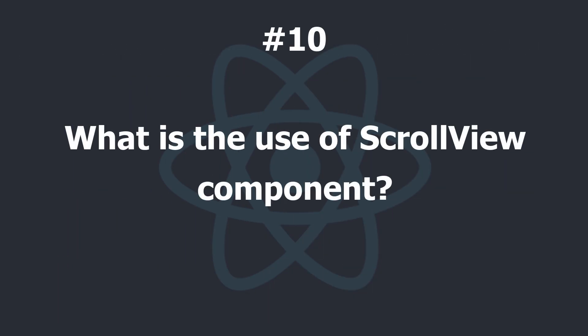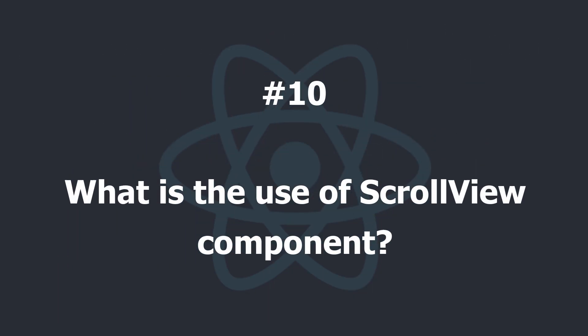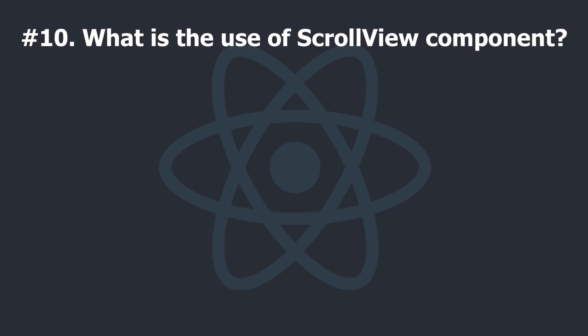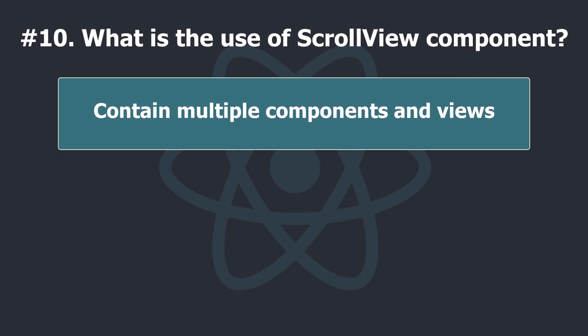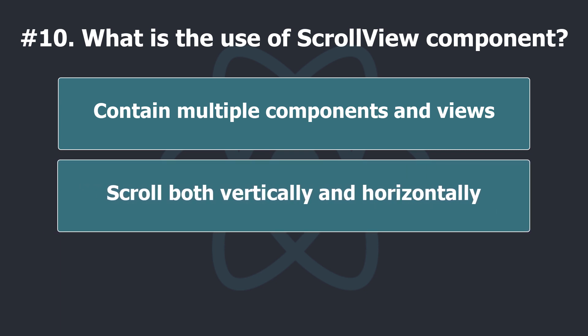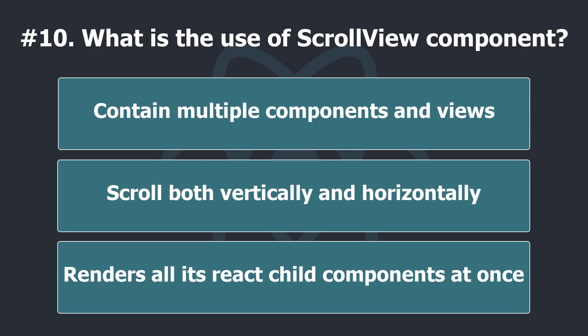What is the use of a ScrollView component? The ScrollView is a generic scrolling container that can contain multiple components and Views. The scrollable items need not be homogeneous, and you can scroll both vertically and horizontally by setting the horizontal property. ScrollView renders all its React child components at once, but this has a performance downside.